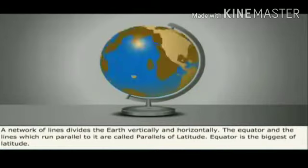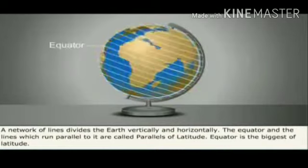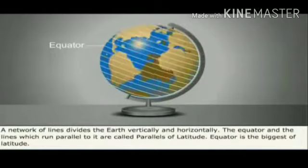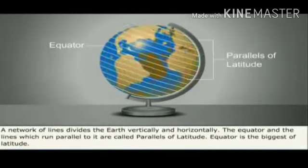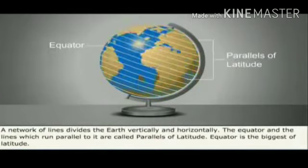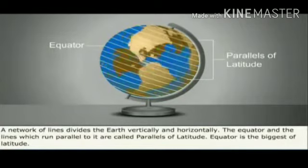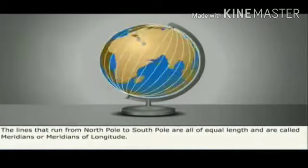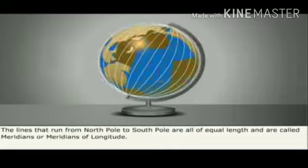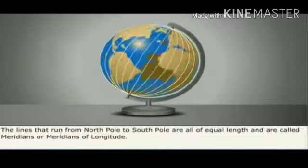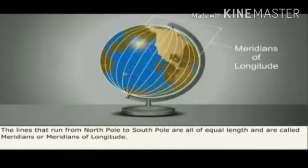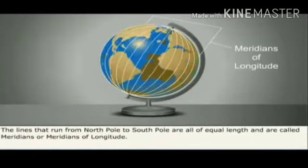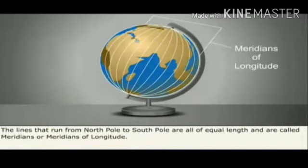A network of lines divides the earth vertically and horizontally. The equator and the lines which run parallel to it are called parallels of latitude. Equator is the biggest of latitude. The lines that run from north pole to south pole are all of equal length and are called meridians, or meridians of longitude.